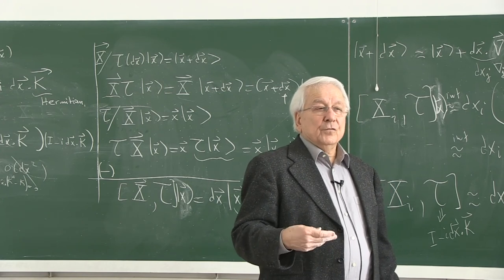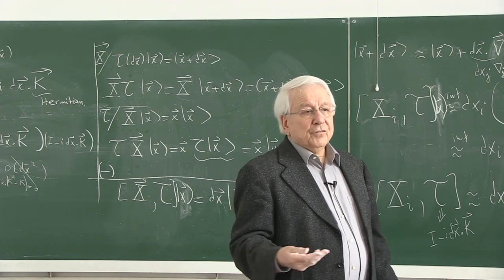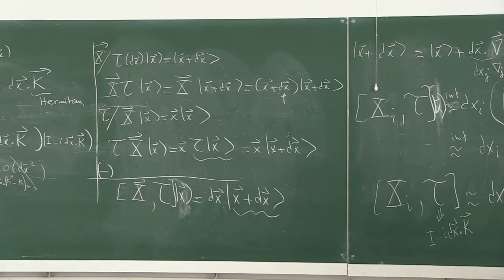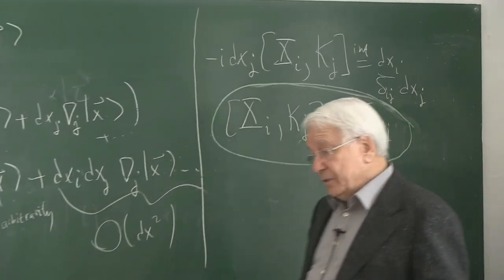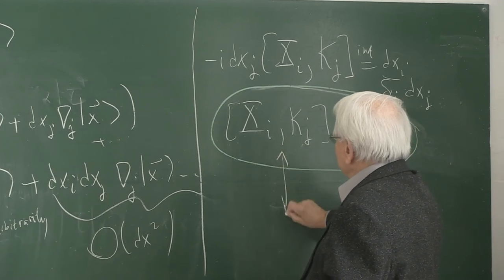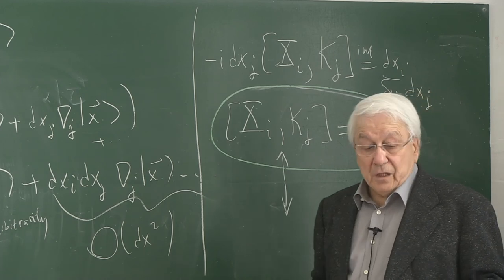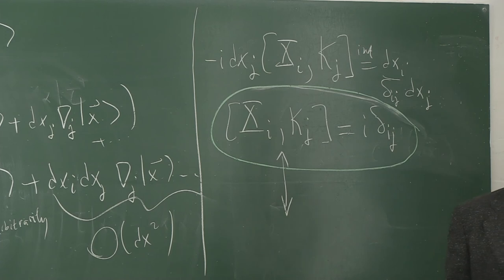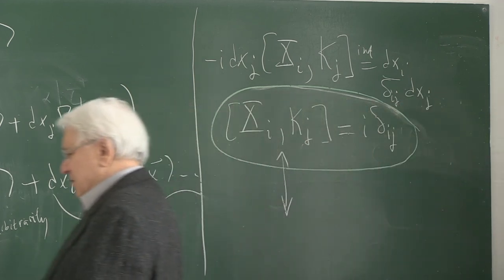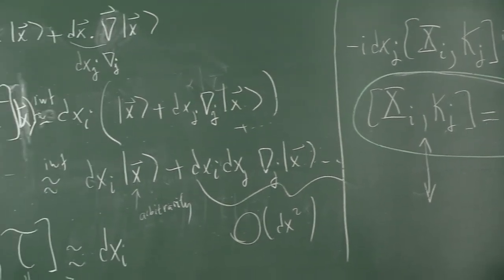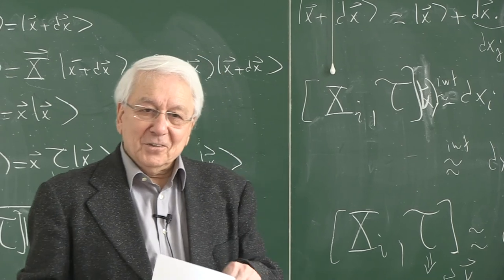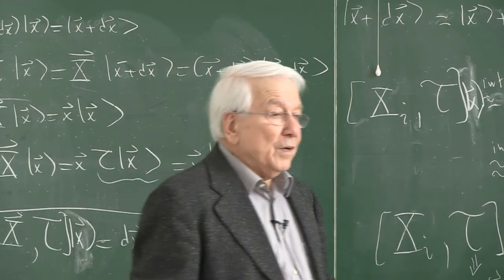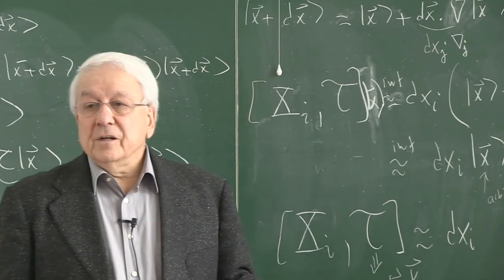So we identified K as the momentum operator P divided by h-bar. Therefore, the infinitesimal translation operator becomes T(dx) = 1 − (i/h-bar) P·dx. P is now the operator satisfying the canonical commutation relation [X_i, P_j] = i h-bar δ_{ij}. That's how we introduce P — P divided by h-bar is identified with K. The first equation followed from the translation mathematics; the second establishes contact with physics.